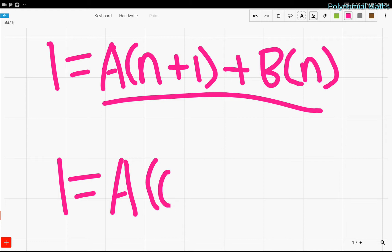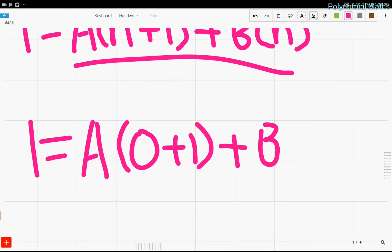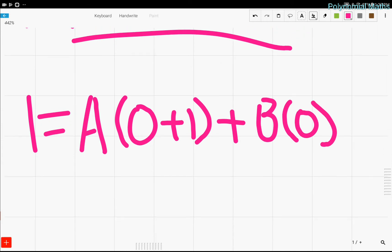If we put in n equals 0, this becomes a times 0 plus 1 plus b times 0. And guess what happens? When we plug in n equals 0, the b gets canceled out. And all we have to do is just solve for a now. And we find that a equals 1.